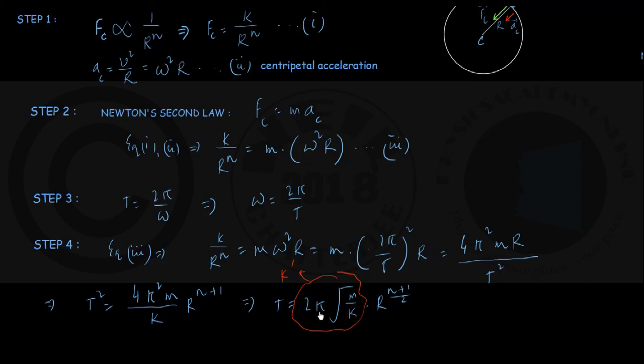Why k dash is a constant? Because π is a constant of value 3.14, m is the mass of the particle, k is a constant of proportionality already assumed earlier. Therefore the whole thing is a constant k dash, and therefore you can write that the time period of revolution t varies directly as r to the power n plus 1 by 2. That is option 3 given in the question, and that is our choice. Thank you very much.